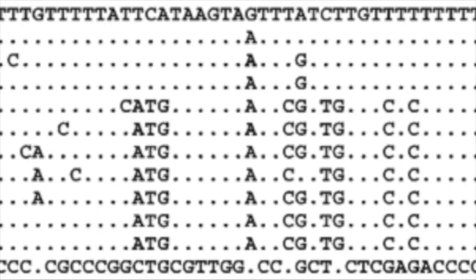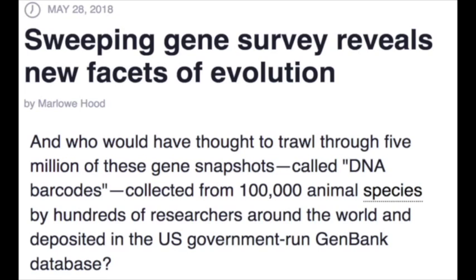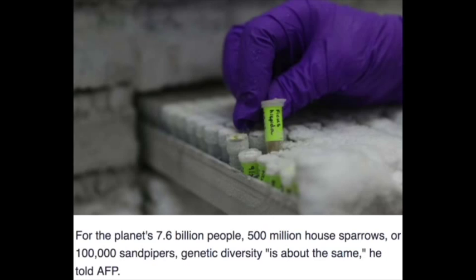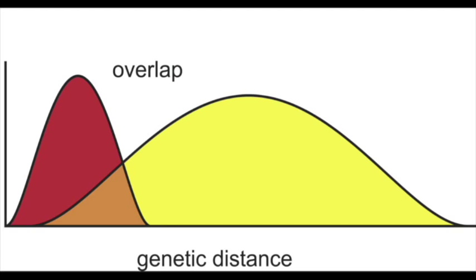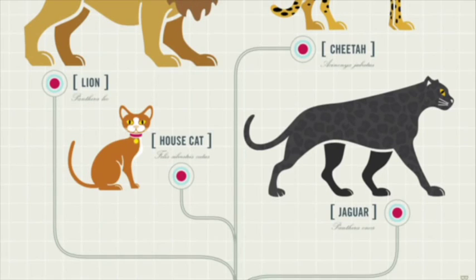Then in 2018, they went testing high numbers of species never before done in history, and the results are now in. By analyzing the barcodes across hundreds of thousands of species, researchers found a telltale sign showing that all animals emerged at the same time, as well as humans, and all have clear genetic boundaries from one another. All felines are the same as well, and showed they were all related all the way down to the species level. The house cat is related to the lion and the panther, and DNA barcoding shows low gap differences.